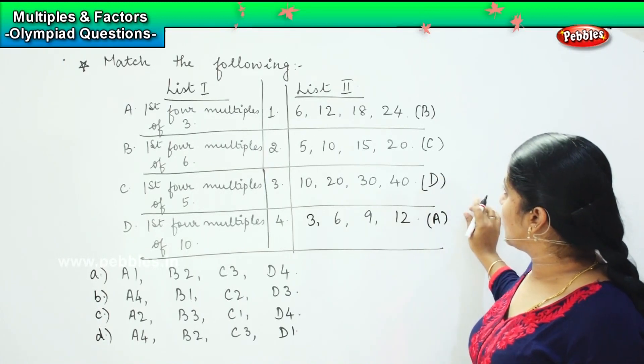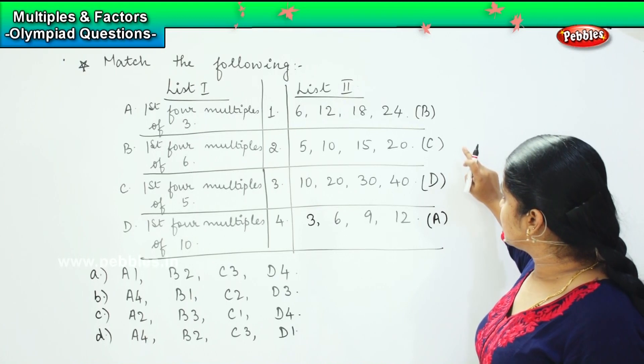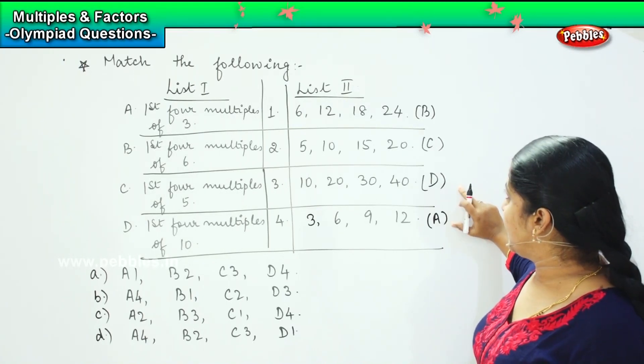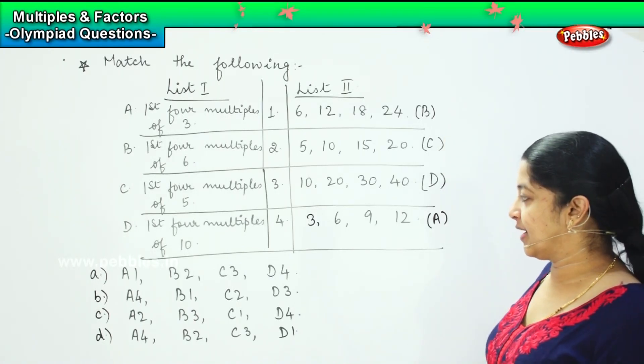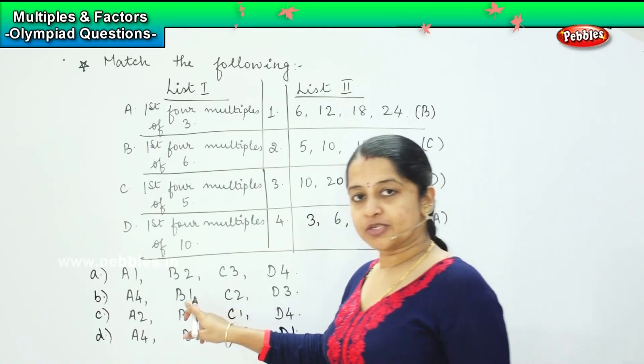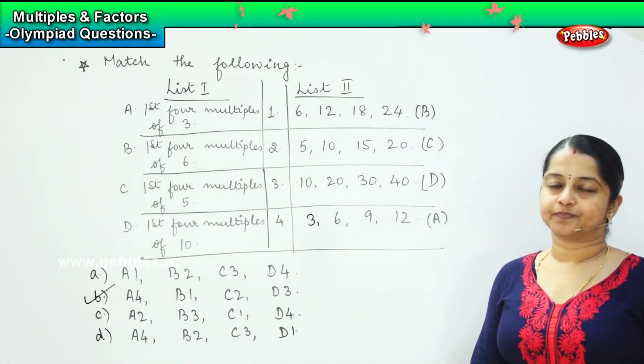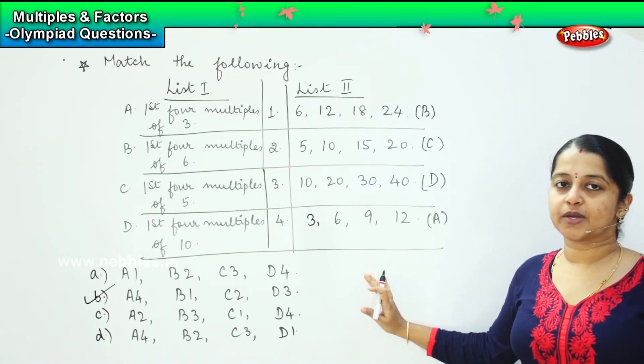So my answer will be 4, 1, 2, and 3. A4, B1, C2, and D3. Where can you find it children? This is option B. So this is my right answer. Clear? Is this one clear? Shall we move to the next question?